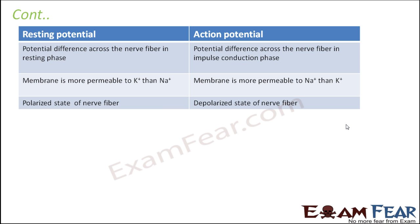Next is resting potential and action potential. Resting potential is the potential difference across the nerve fiber which exists when it is in the resting phase — that is, it is not conducting any impulse. Whereas action potential is when it is conducting an impulse; that is why the potential is in action — the potential is moving. In resting potential, the membrane is more permeable to potassium ions than sodium ions. Whereas in action potential it is just the opposite: during the depolarized state, the membrane becomes more permeable to sodium ions because voltage-gated ion channels open up and there is a rapid influx of sodium ions.